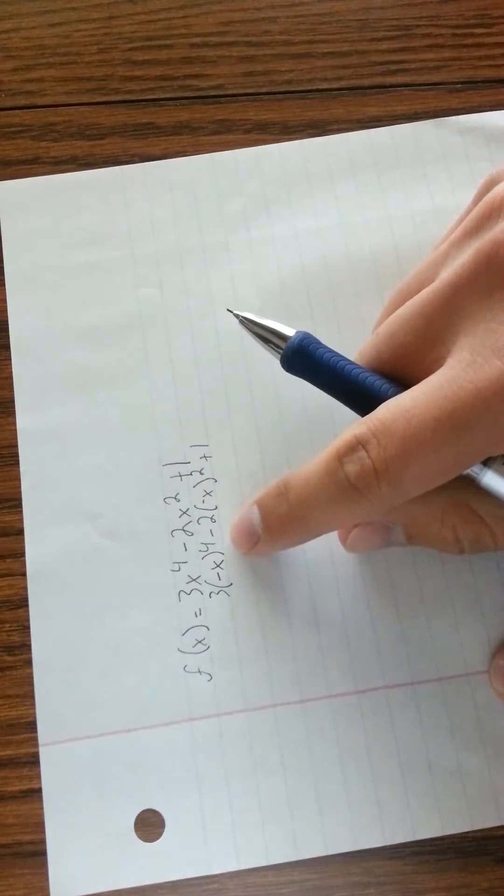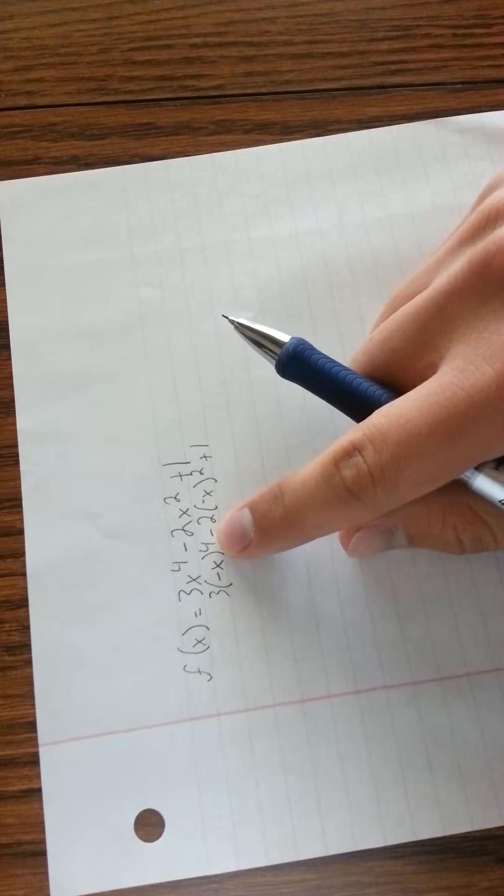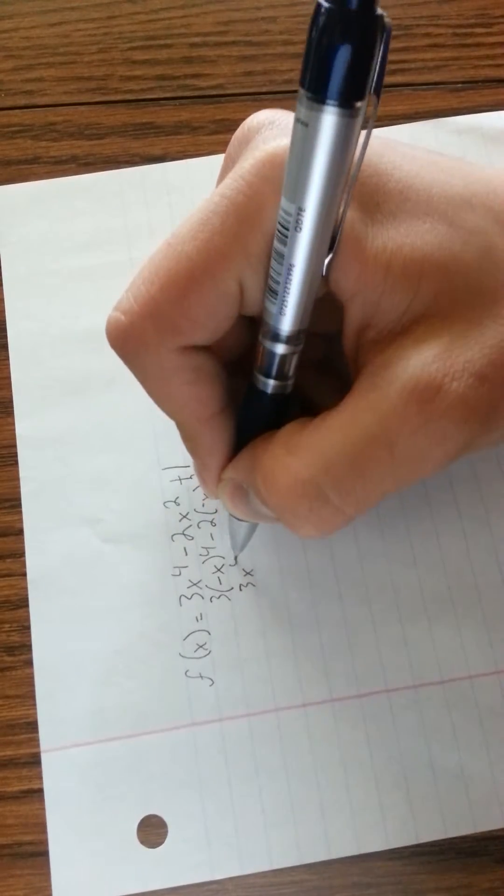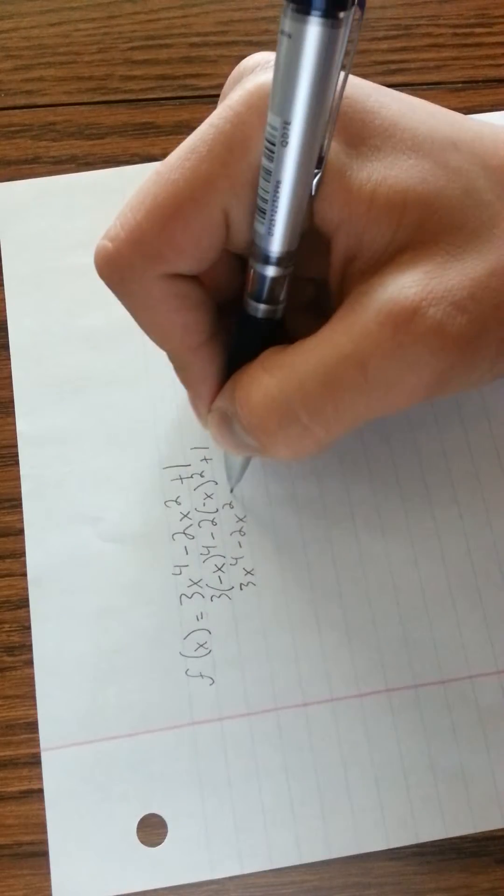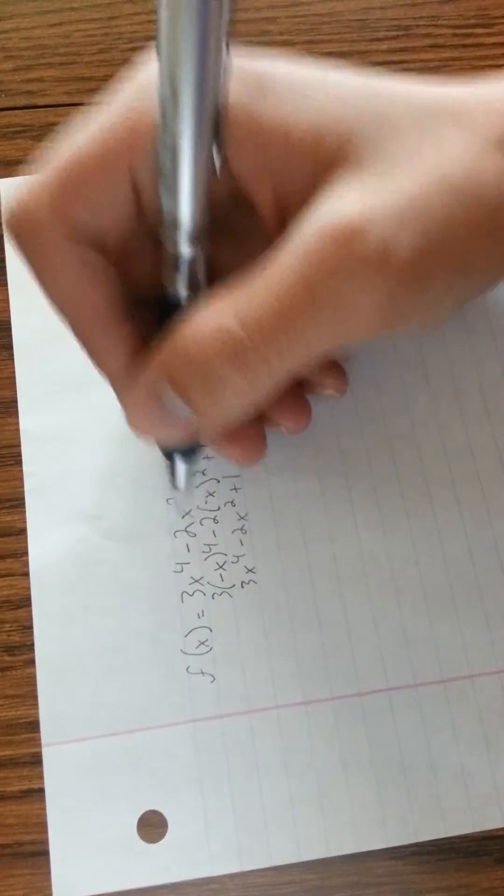Any time you have a negative to a positive power, it's going to become positive. So essentially you still get 3x to the 4th minus 2x squared plus 1, which is your original problem.